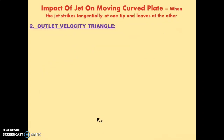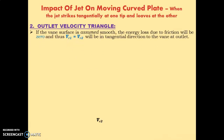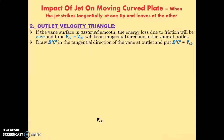Now we draw the outlet velocity triangle. If the vane surface is smooth, the energy loss due to friction will be zero, and thus if the jet enters the plate with relative velocity Vr1, it will come out with relative velocity Vr2, and Vr1 will equal Vr2. Draw B'C' in the tangential direction of the vane at outlet and put B'C' equal to Vr2.